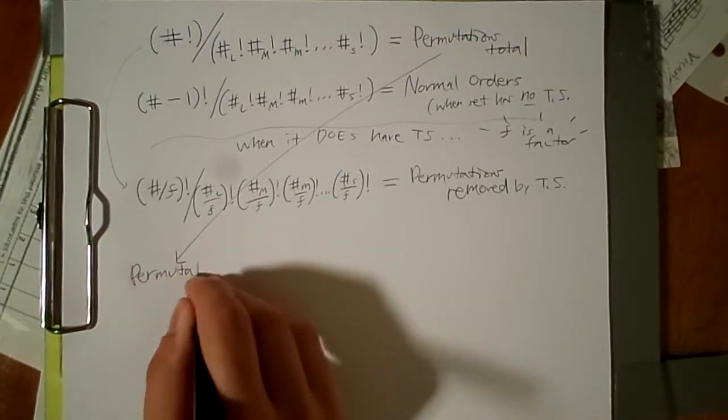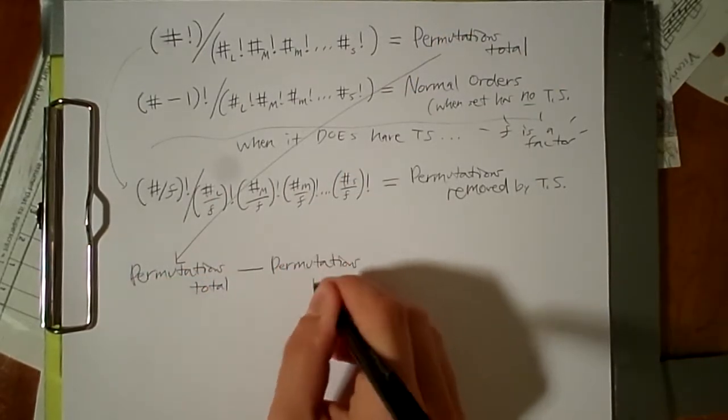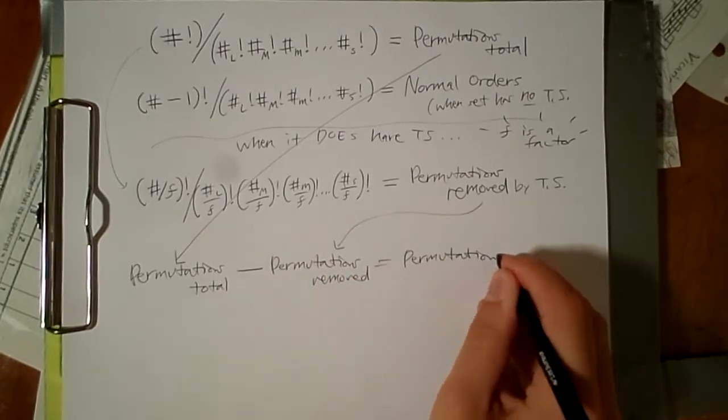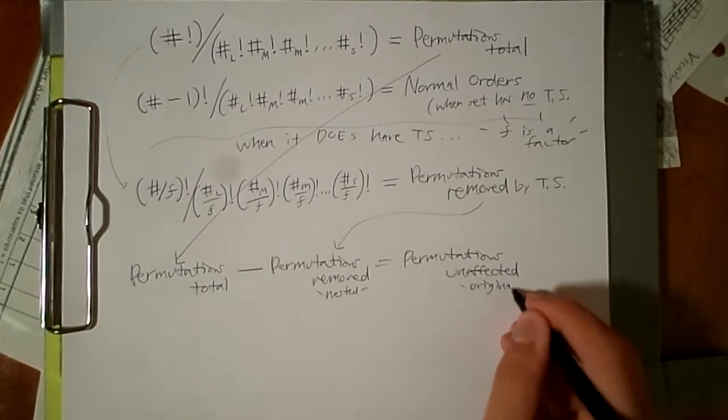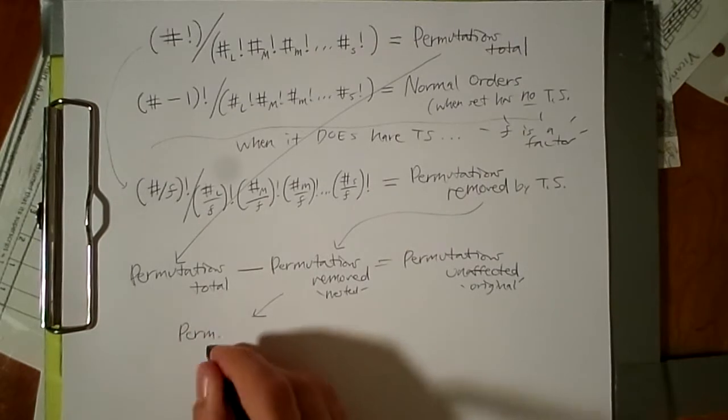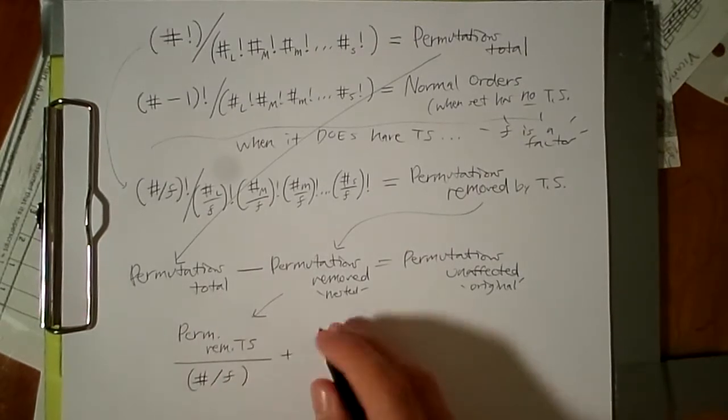This common factor causes a phenomenon in music theory, which we often call transpositional symmetry. Transpositional symmetry is only important when converting from permutation to normal order, shown in the second video.